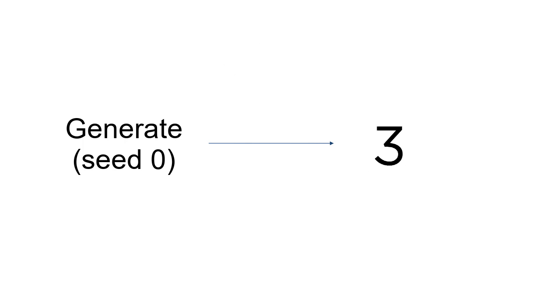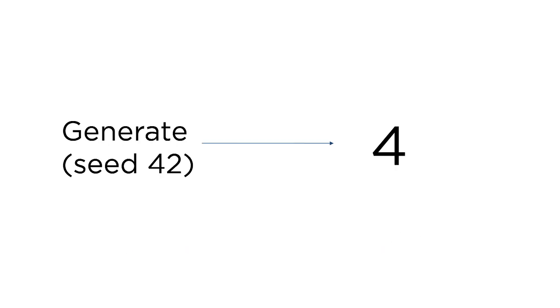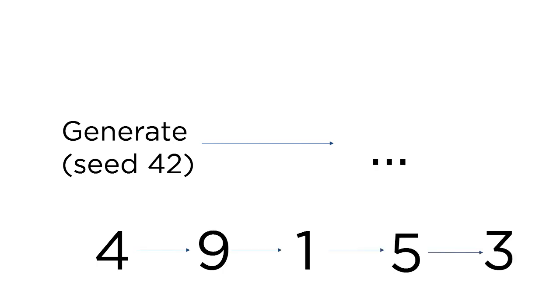And if they are reseeded with the same seed as before, they will generate the same sequence of numbers. If they are given a different seed, then they can generate a whole new sequence that is unique to that seed, but again, predictably unpredictable.